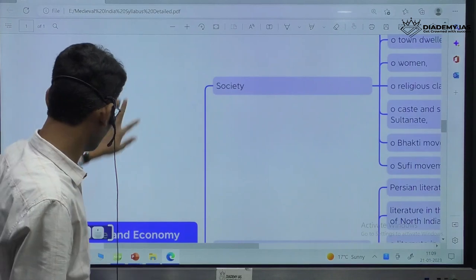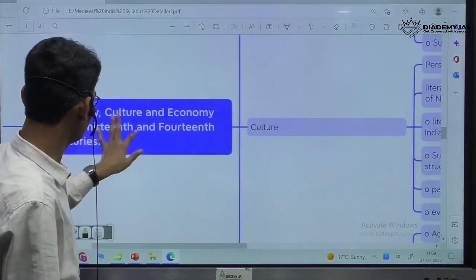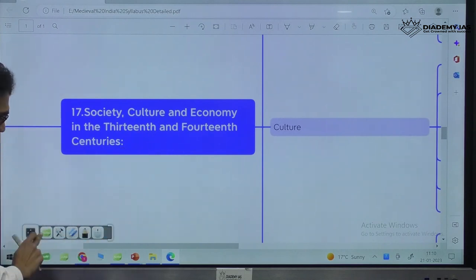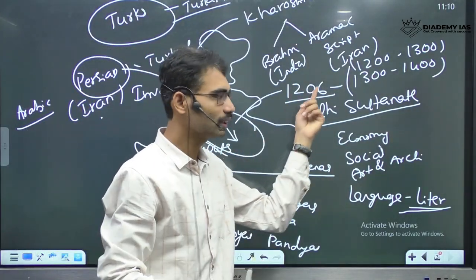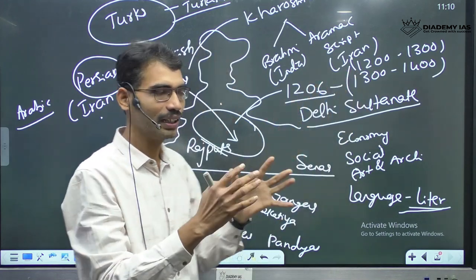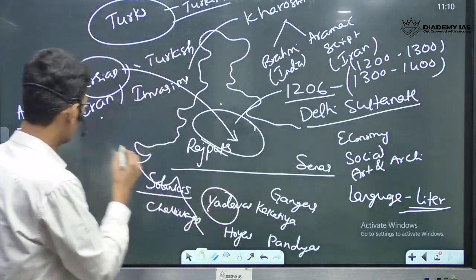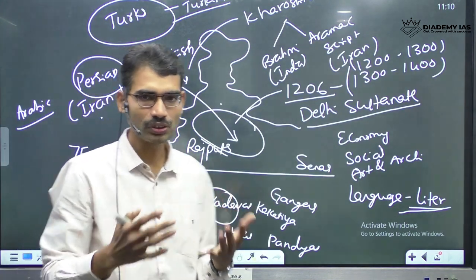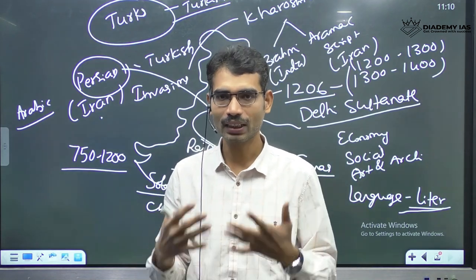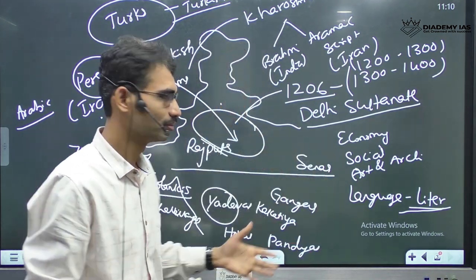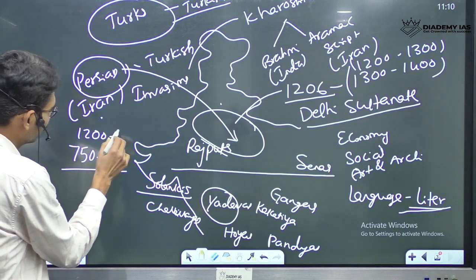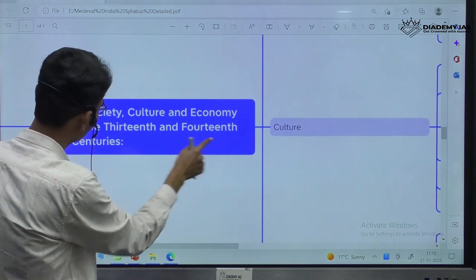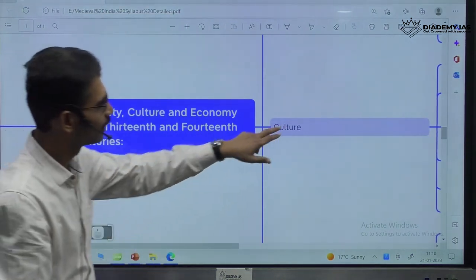UPSC clearly mentioned the next unit — Society, Culture, Economy in the 13th and 14th centuries. Simple — 13th and 14th centuries, again in the same time period, like we have done from 750 to 1200. What is the society? What is the economy? What is the culture?